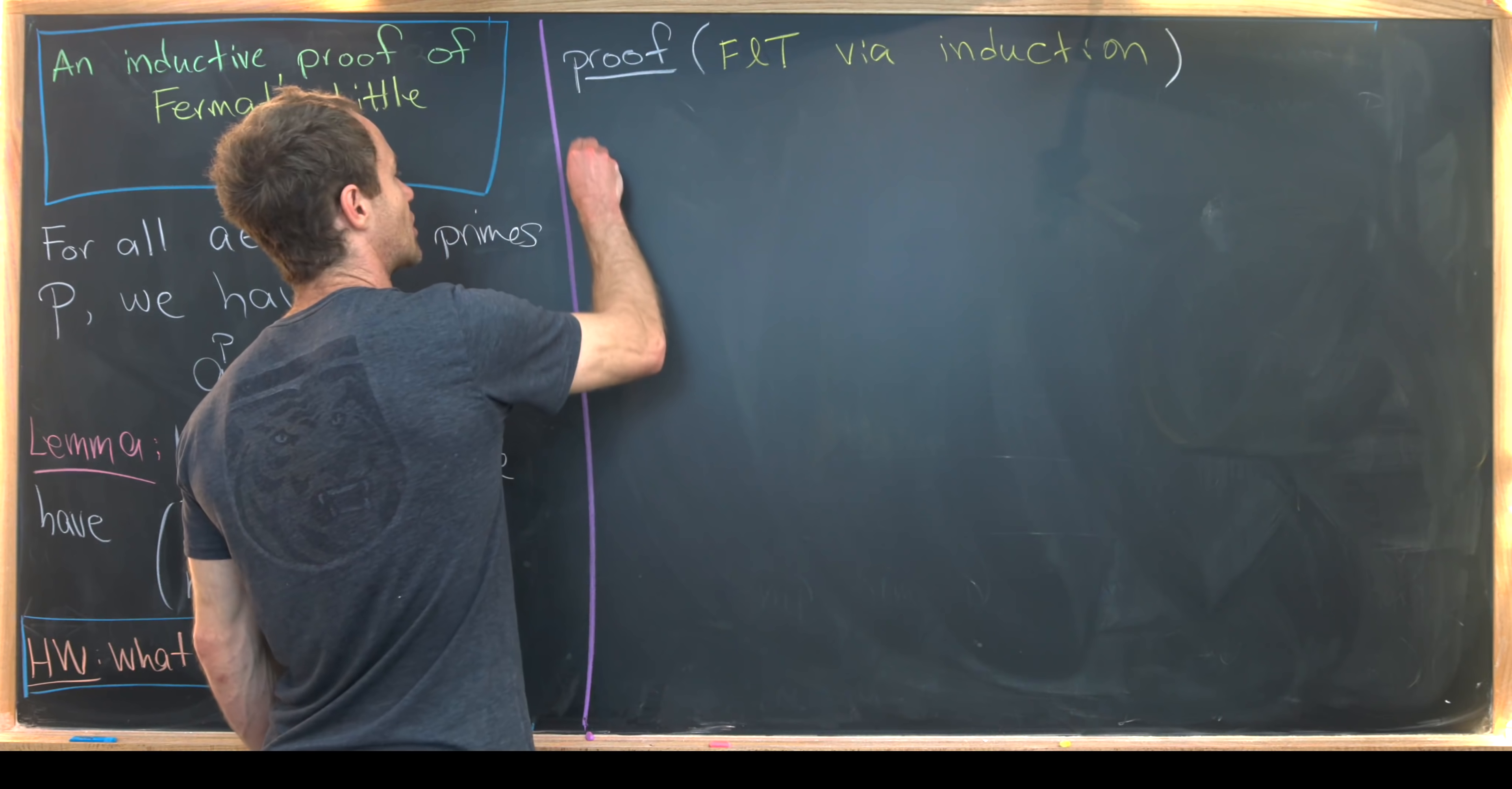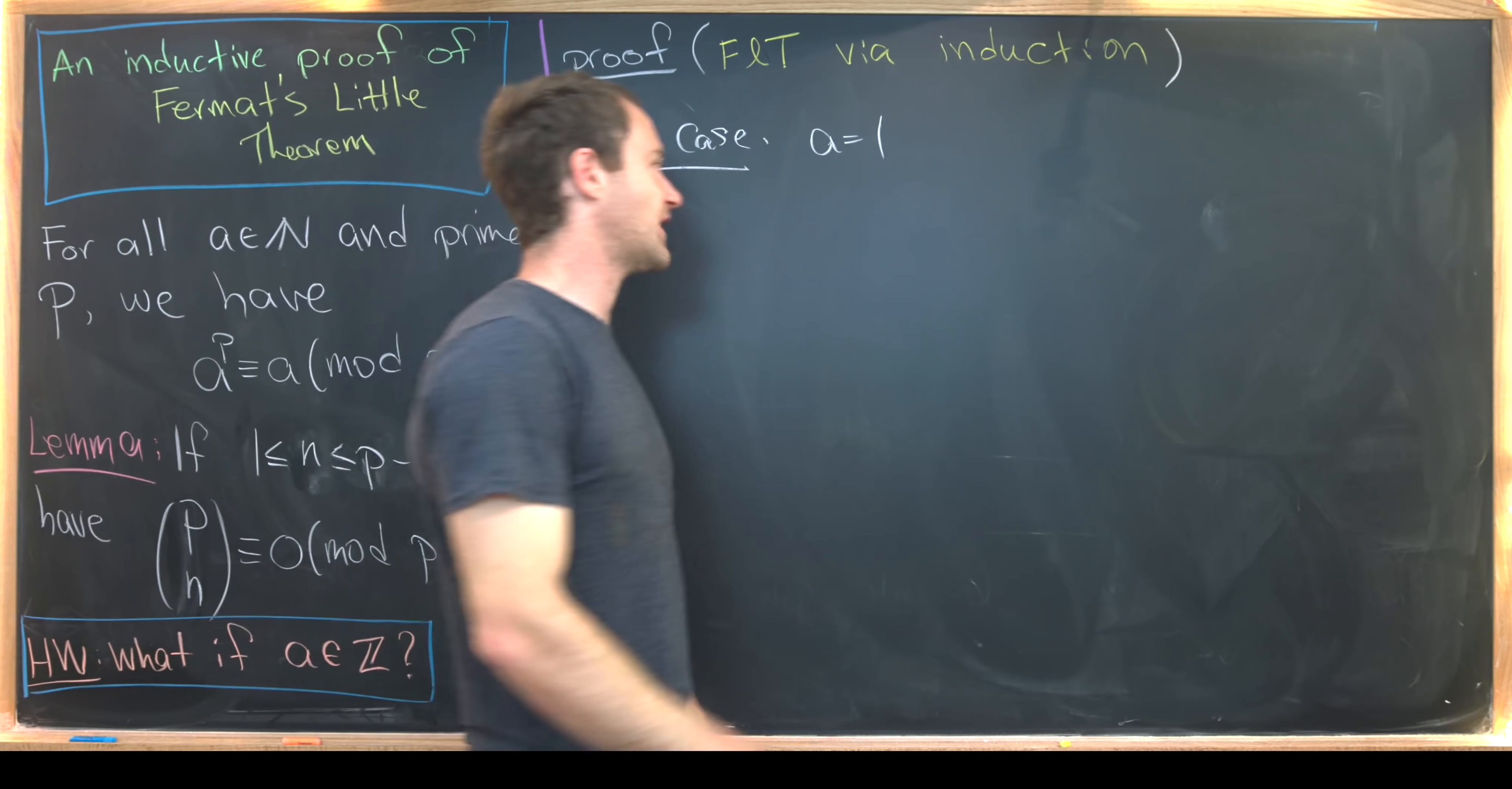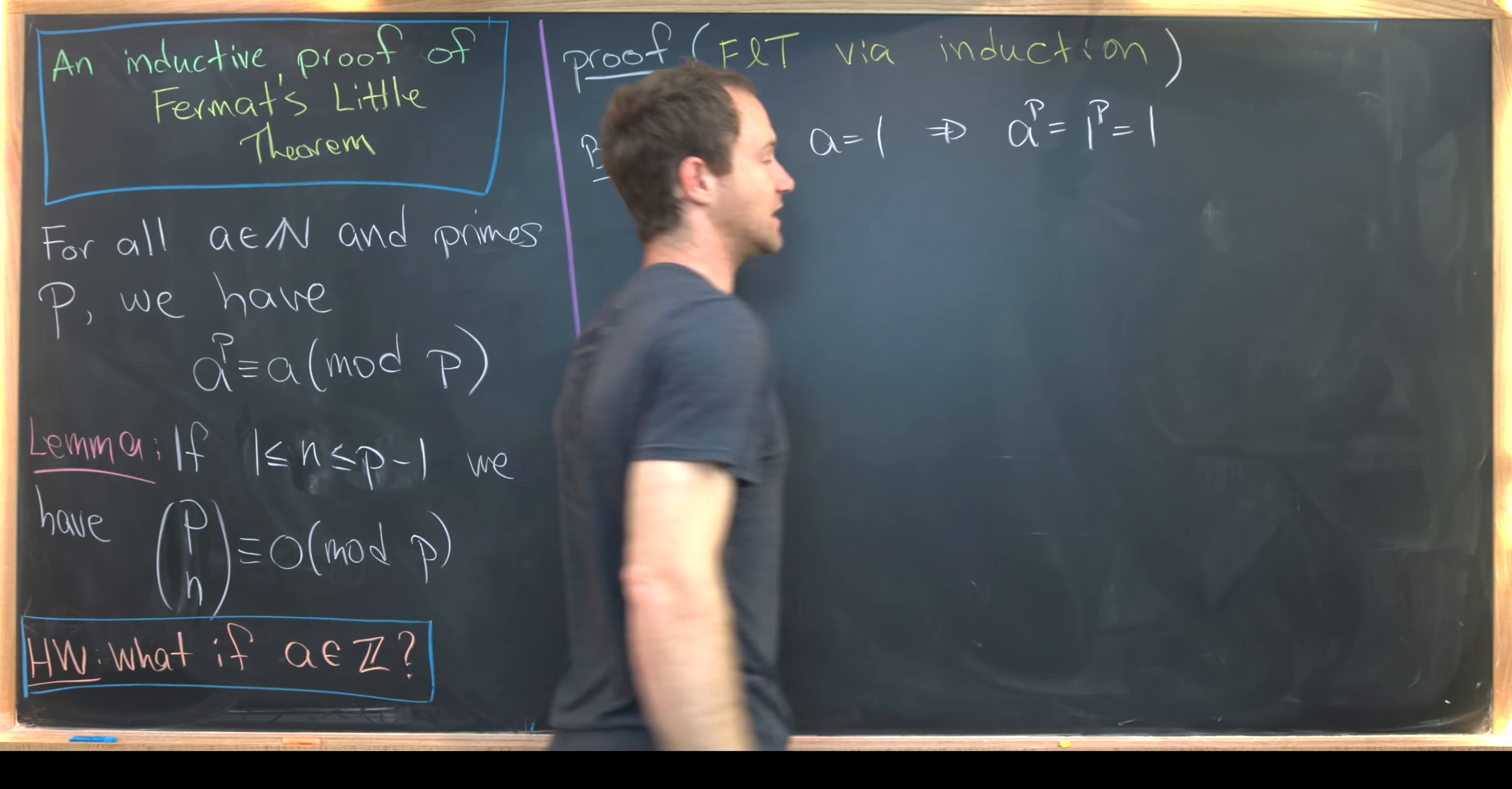So let's start with our base case. And our base case will be the first natural number. In other words, A is equal to 1. But if A is equal to 1, that means A to the P is equal to 1 to the P, which is also equal to 1.